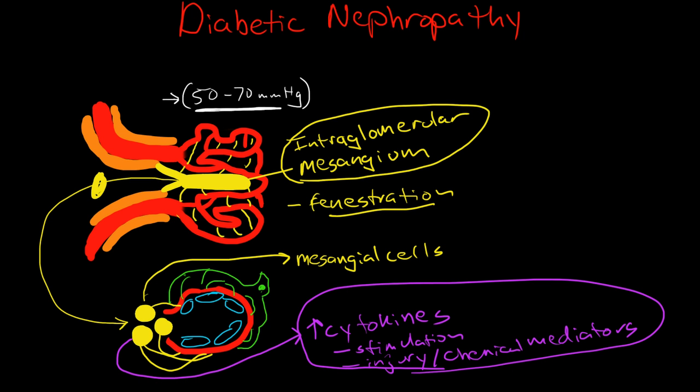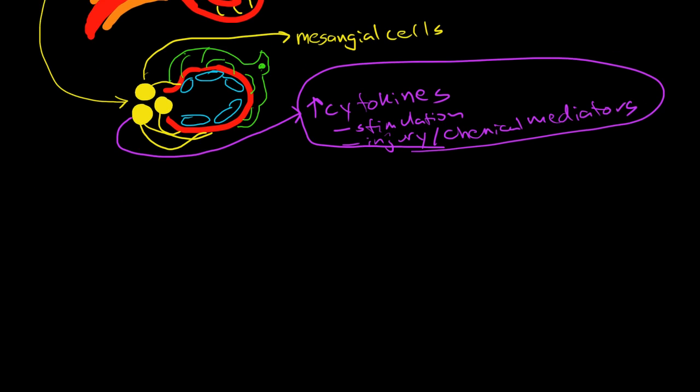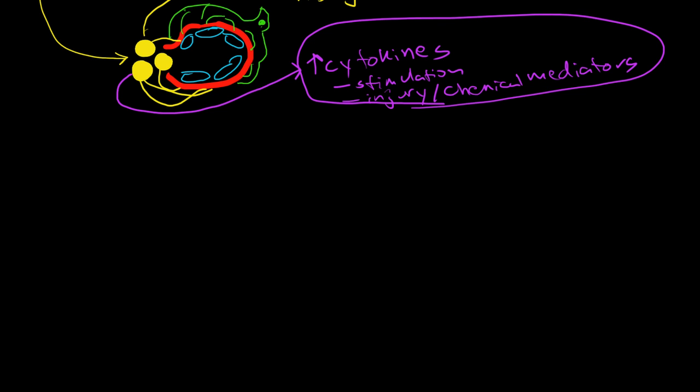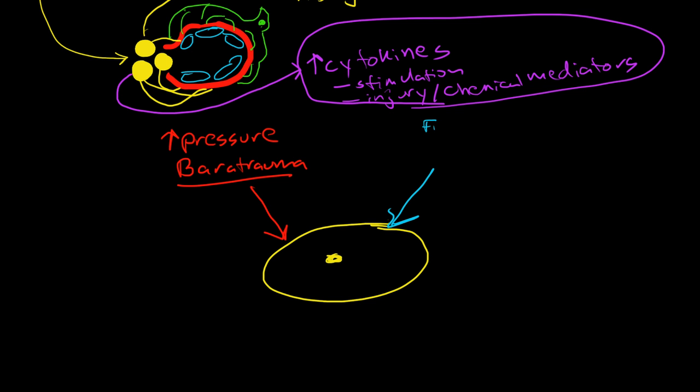The mesangial cells play a very central role in the pathogenesis of diabetic nephropathy. These mesangial cells are going to respond to two inputs: one is increased pressure and barotrauma, and the other is injury from free radicals that are released due to high blood glucose.